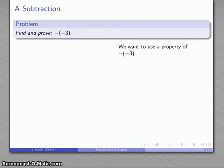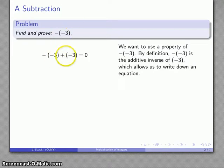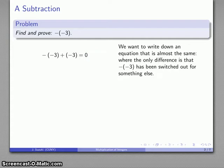We want to find and prove this, so we want to use a property of the additive inverse. By definition, the additive inverse of the additive inverse is going to be the additive inverse of negative 3, and that allows me to write down an equation: this thing plus negative 3 is going to be zero.